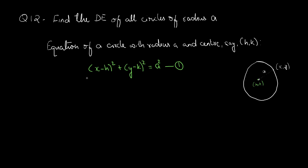Given how a circle is defined, we can easily form its equation using the distance formula. The distance between (x, y) and (h, k) gives x minus h whole square plus y minus k whole square equal to A square. This x and y satisfies all points of the circle. We have two arbitrary constants here, h and k. A is a fixed constant, not arbitrary. So since we have two arbitrary constants, our differential equation will be of second order, and we need to eliminate both h and k using differentiation.